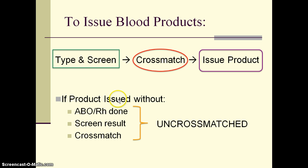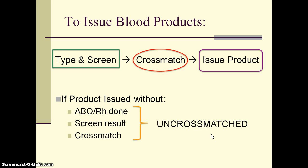If a product is issued without the ABO/RHD type being done, or the type is known but the antibody screen is still pending, or the screen is negative but the electronic cross match has not yet been completed, then the product is by definition uncrossmatched. For example, in a trauma patient who is massively bleeding, if the ABO type is confirmed as A positive after five minutes but the antibody screen is still running, clinically the patient cannot wait — group-specific A positive red cells can be issued even though the antibody screen is not yet finalized, making those units uncrossmatched.